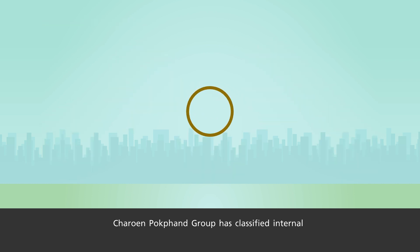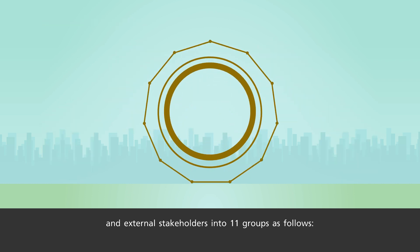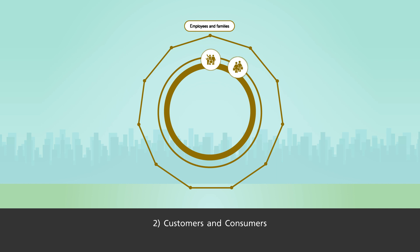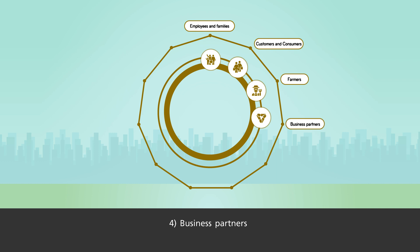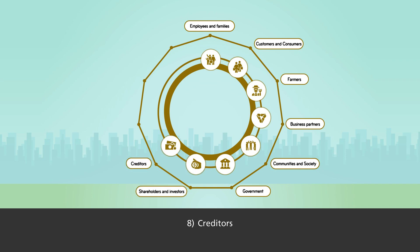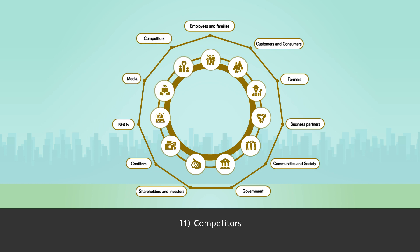Charon Pocopon Group has classified internal and external stakeholders into 11 groups as follows: 1. Employees and Families, 2. Customers and Consumers, 3. Farmers, 4. Business Partners, 5. Communities and Society, 6. Government, 7. Shareholders and Investors, 8. Creditors, 9. NGOs, 10. Media, 11. Competitors.